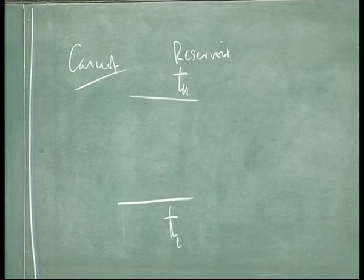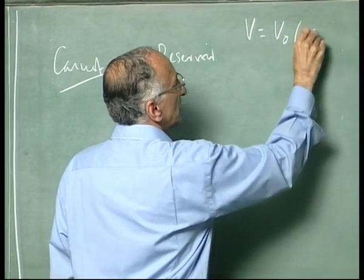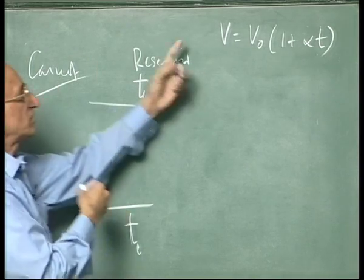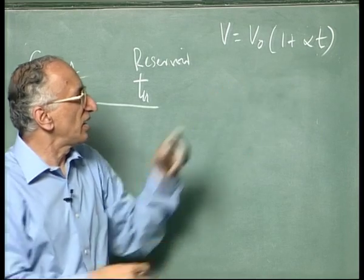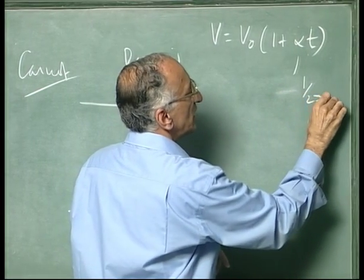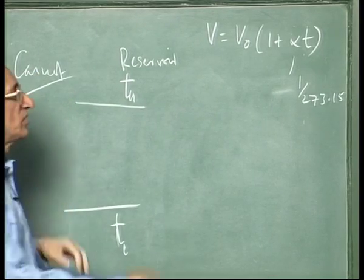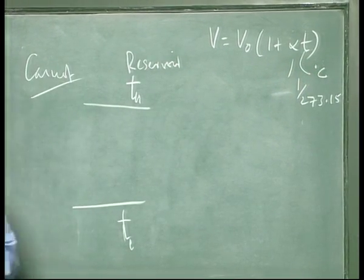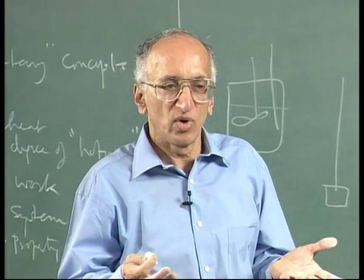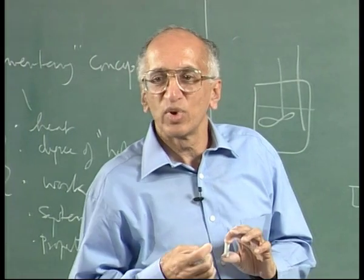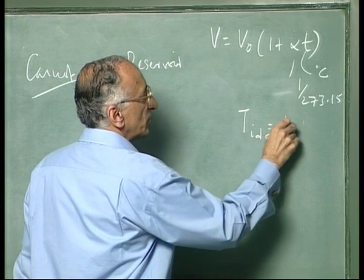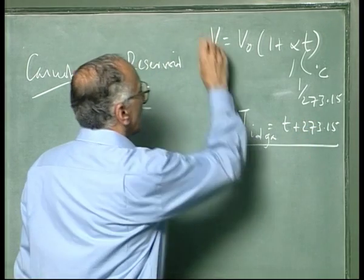Gay-Lussac showed that if you measure the volume of gases with an empirical temperature small t, the volume can be expressed in terms of alpha, which turned out to be a volume increase of 1/273.15. So if t was measured in degrees Celsius, experimentally, the conclusion was that at minus 273.15 degrees there would be no volume and therefore no temperatures below that. So the empirical temperature scale had already been introduced: T ideal gas was simply T plus 273.15.